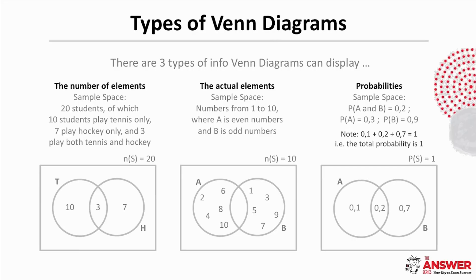It is important with Venn diagrams to know that there are three types of ways information can be displayed. These three ways are the number of elements, the actual elements themselves and probabilities. Let's have a look through an example of each of these.